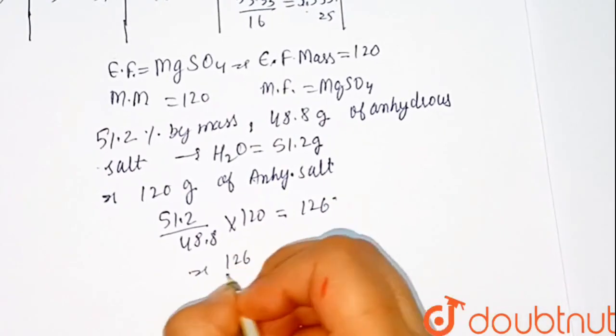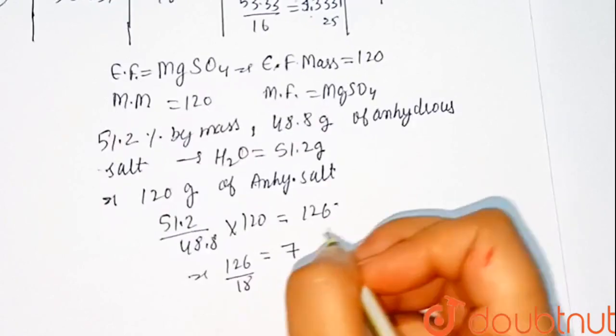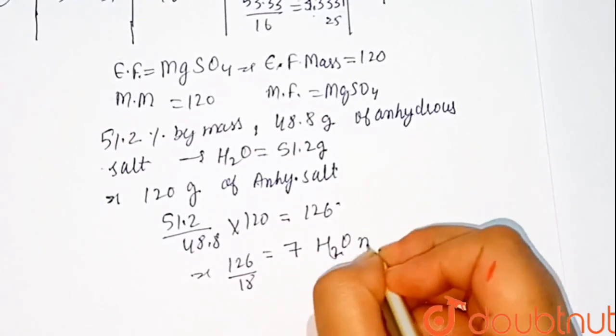On solving this, 126 divided by 18, which equals 7. 7 water molecules.